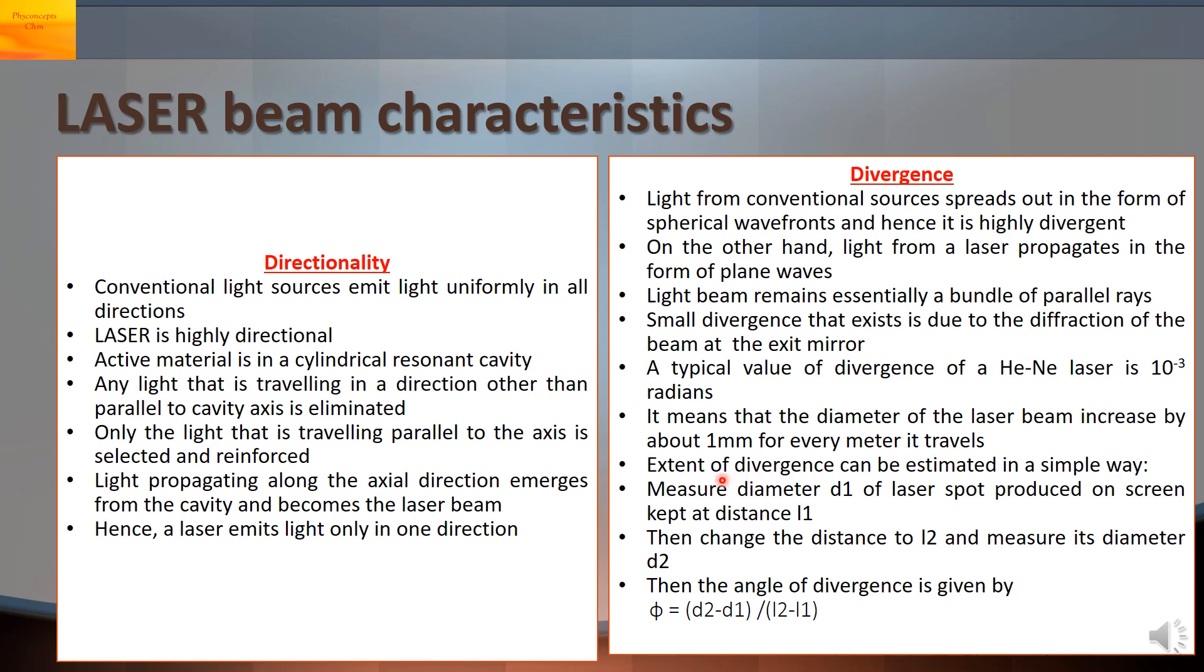We can also find the divergence like this. First measure the diameter D1 of the laser spot produced on the screen kept at a distance L1. Then change this distance to L2 and again measure the diameter which will be D2. Then we can find the angle of divergence from this formula. Divergence angle phi is equal to D2 minus D1 upon L2 minus L1.